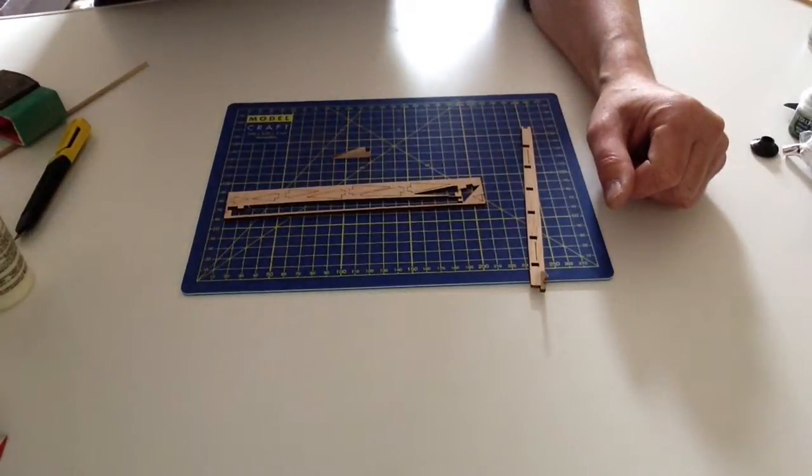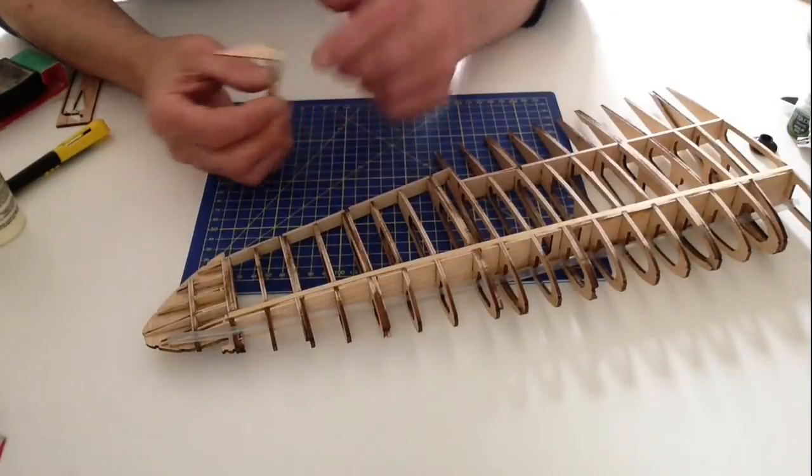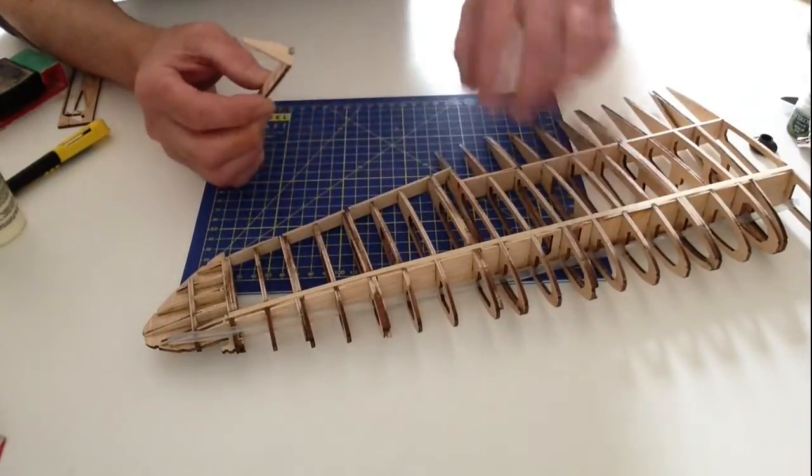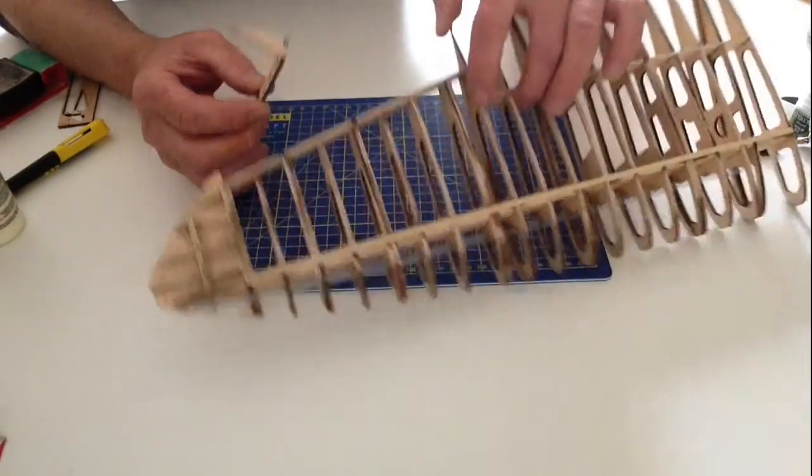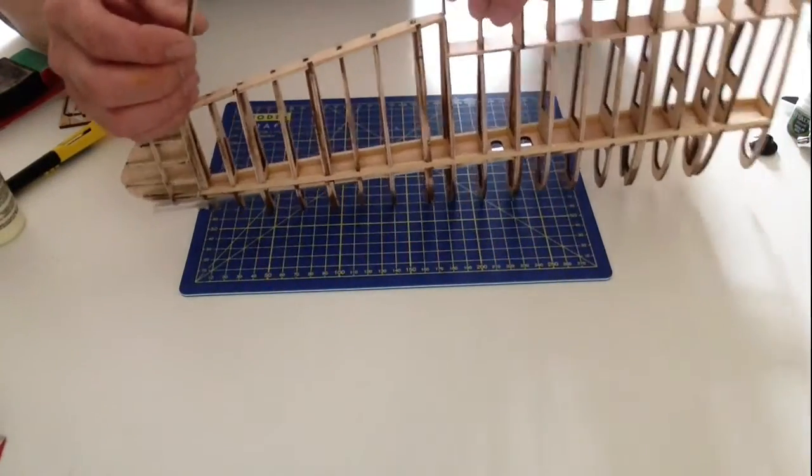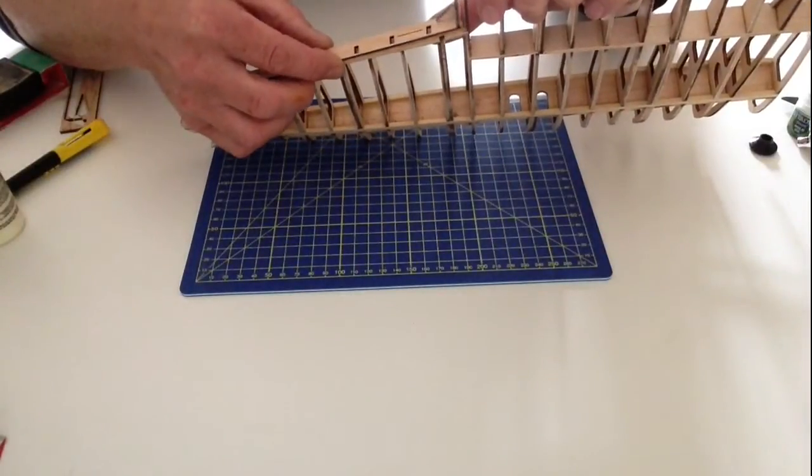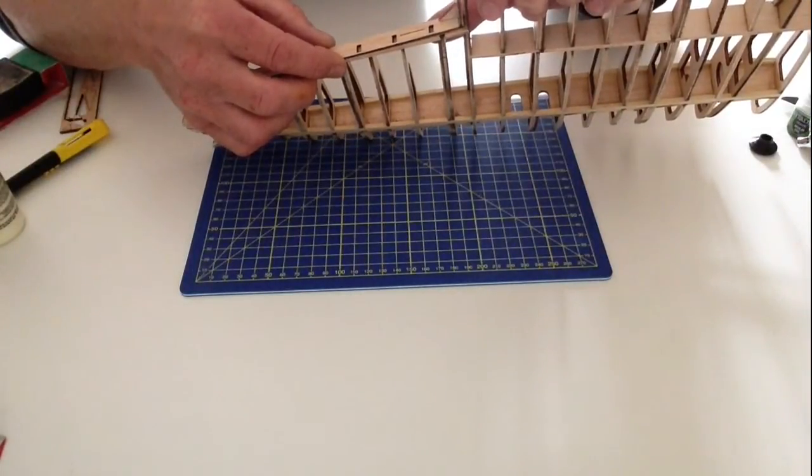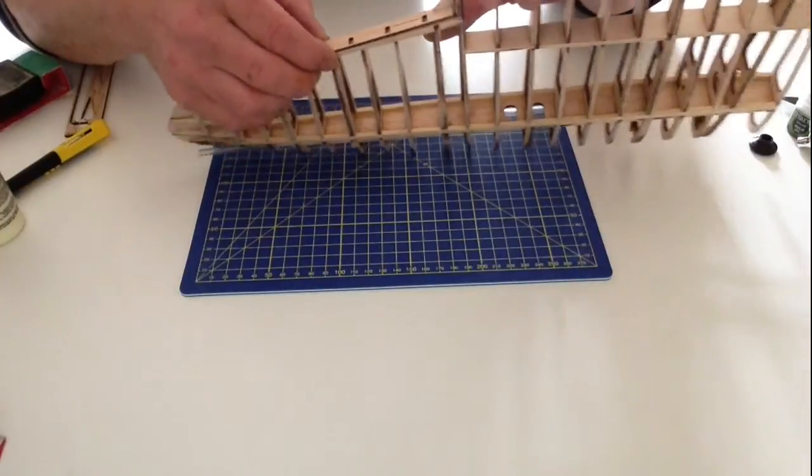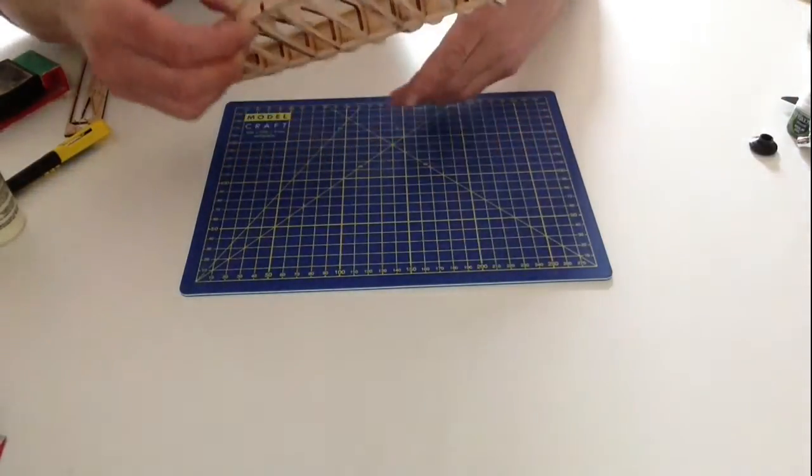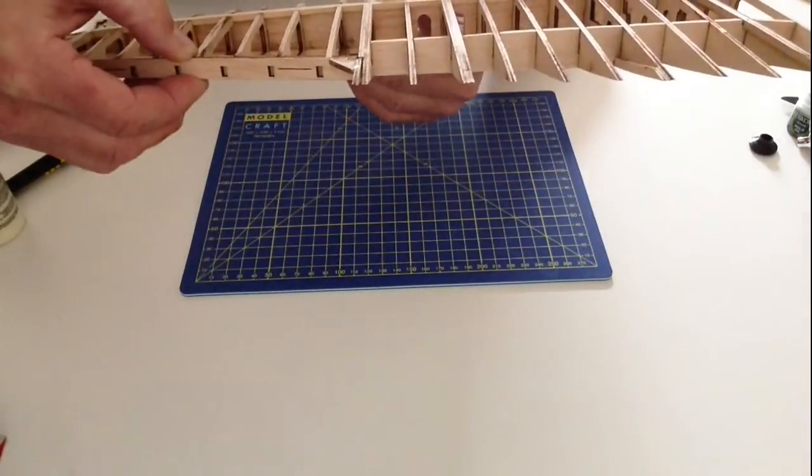Now once you've done that, before the glue fully dries, you need to do a few adjustments. Take your wing, take the spar, place it up against the wing like so, and just make any slight adjustments as you can see there.